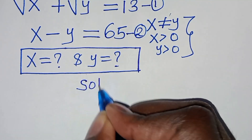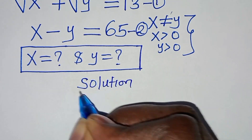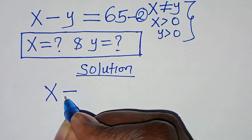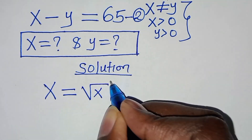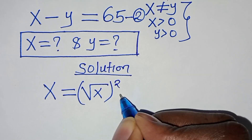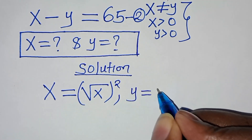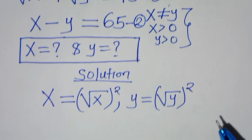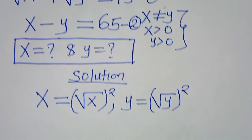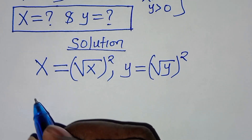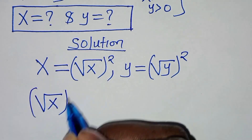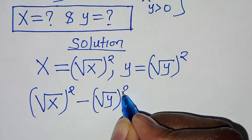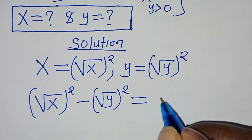Let's present the solution from here. The first thing to do: we can express x as square root of x raised to power 2, and we can express y as square root of y raised to power 2. Substituting this into equation 2, we have square root of x raised to power 2 minus square root of y raised to power 2, equals 65.